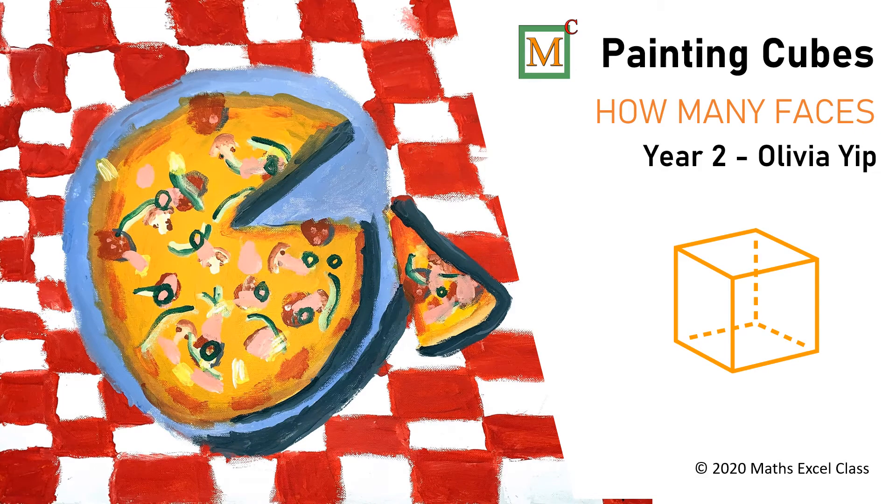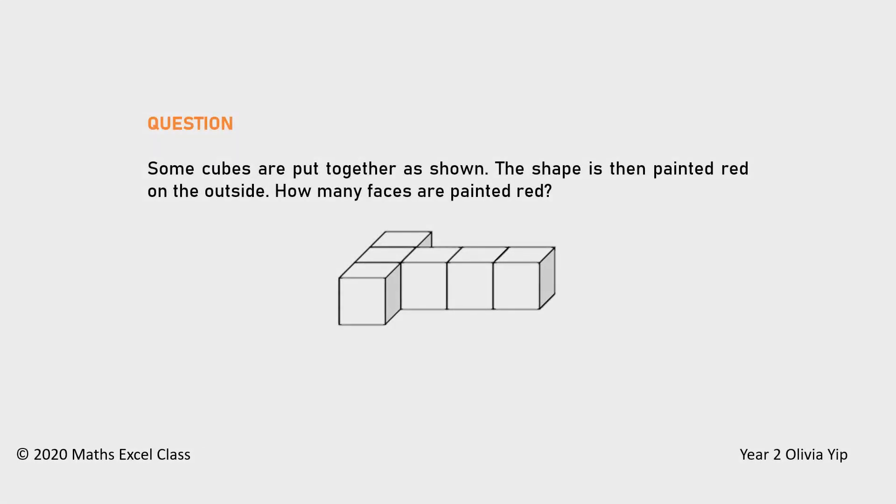Painting cubes. How many faces? Some cubes are put together as shown. The shape is then painted red on the outside. How many faces are painted red?